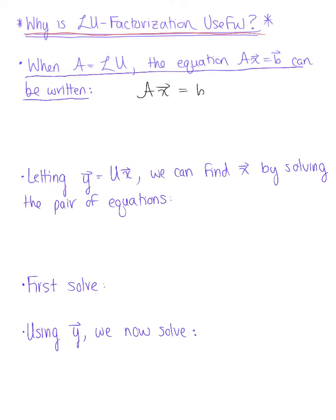We can replace A with our LU factorization. So we have matrix L times matrix U times vector X equals vector B, and then we're going to group matrix U and vector X together.